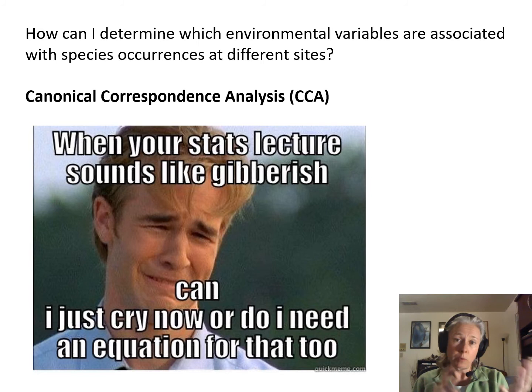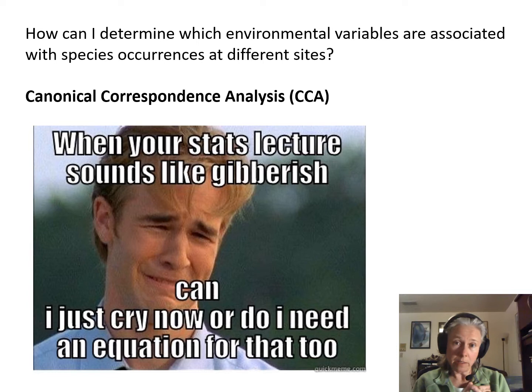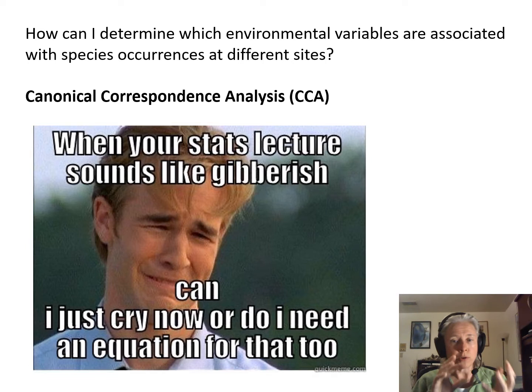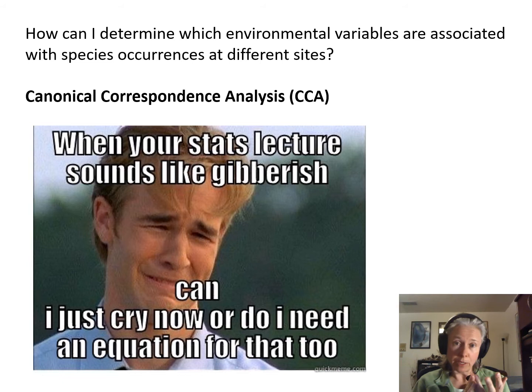So we will have covered PCA, which is unconstrained; RDA, which is constrained; NMDS, which is unconstrained; and today CCA, which is constrained — two unconstrained, two constrained in this class. The difference between the two choices in each type of ordination is whether you think there's a linear response of species to environmental variables at your sites or a unimodal one. PCA and RDA are suitable if you think the response is linear. NMDS and CCA are your go-tos if the response is unimodal.